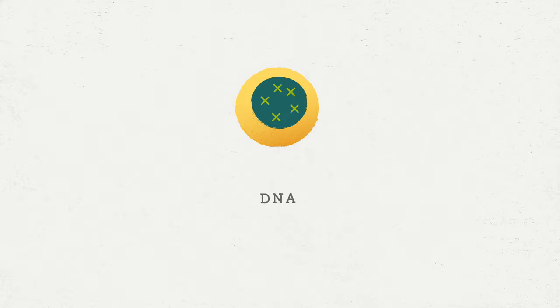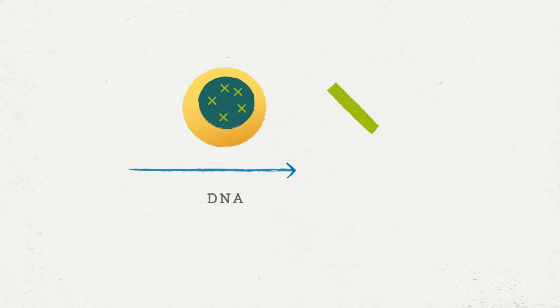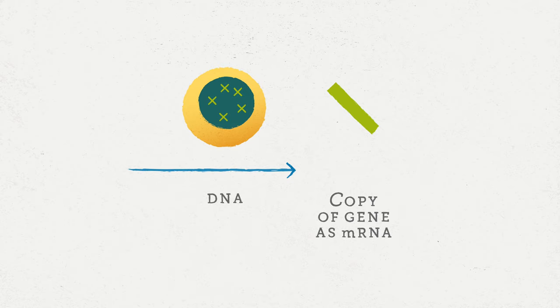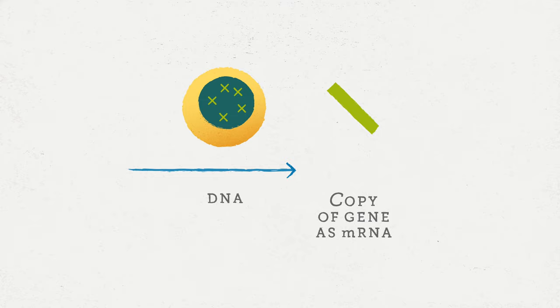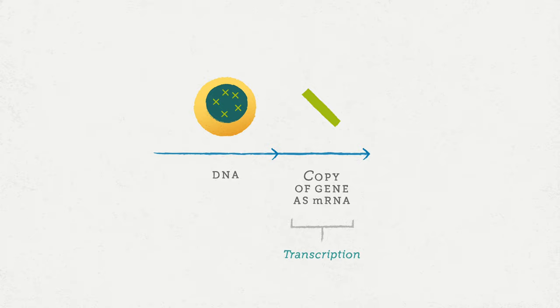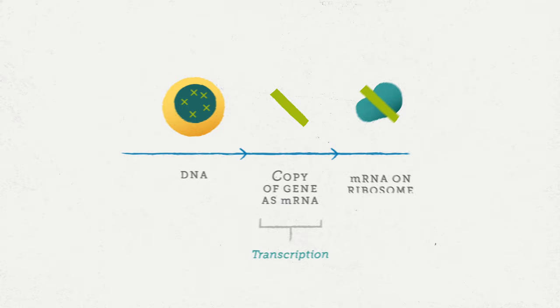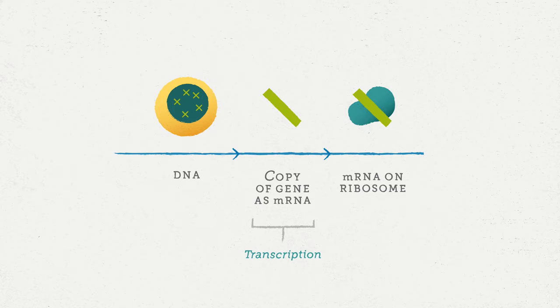Our DNA is our genetic material and has its own language with building blocks called nucleotides. We have four types of nucleotides that compose DNA, and within DNA you have the recipe to produce each unique protein. Your cells make a copy of that DNA into a molecule called RNA — it's like making a copy of a page from a book to take to your kitchen. That copy is called messenger RNA, and this process is called transcription.